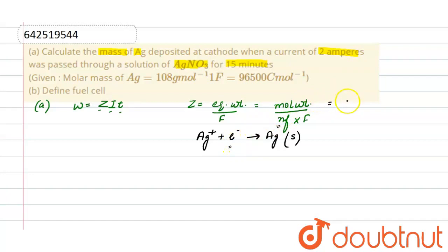So Z is molecular weight 108 divided by 1 into N-factor 96500. Put all the values in this formula: weight equals 108 divided by 96500 where current is 2 amperes and time is 15 minutes, that is 15 into 60. So weight deposited is 2.015 grams.